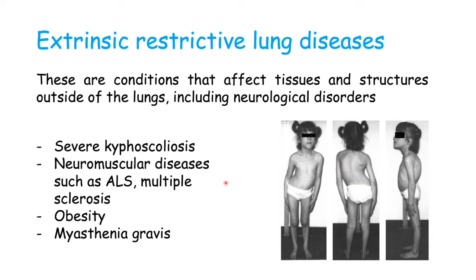Neuromuscular diseases such as amyotrophic lateral sclerosis and multiple sclerosis can be classified as extrinsic restrictive lung diseases, as they affect the ability of our muscles to expand the chest wall — for example, the diaphragm — so we don't get enough inhalation. Also, obesity and myasthenia gravis: obesity because there is a lot of weight on top of the chest wall making it hard for muscles to expand, and myasthenia gravis being another neuromuscular condition.